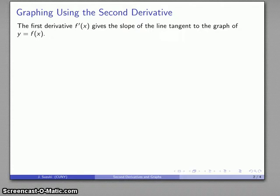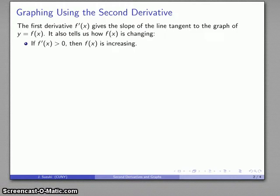The first derivative gives us the slope of the line tangent to the graph of y equals f, and it also tells us how the function itself is changing. If the derivative is positive then our function is increasing; likewise if our derivative is negative then our function is decreasing.